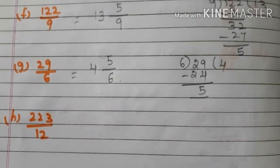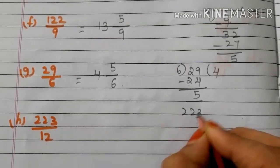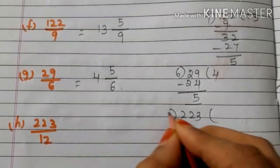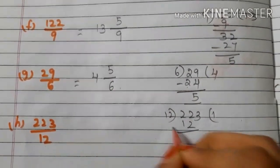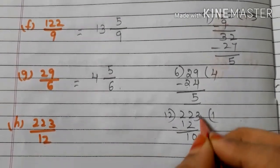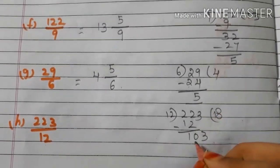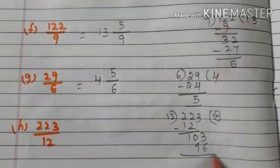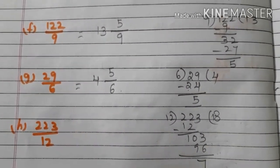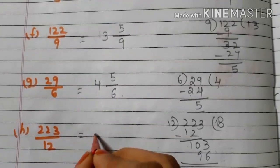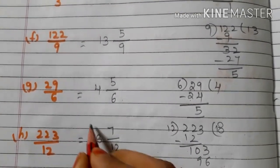H: 223/12. Divide 223 by 12. 12 ones are 12, 22 minus 12 is 10, bring down 3. 12 eights are 96. 103 minus 96 is 7. Write the mixed fraction: 18 and 7/12.